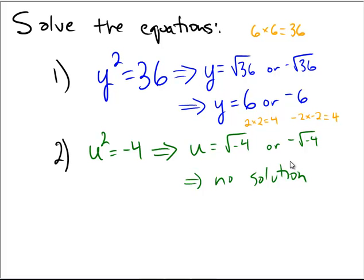So in summary, when you have a positive number, you will generally get 2 solutions to this particular type of problem. But when you have u squared equals a negative number, you will always have no solution among the real numbers.